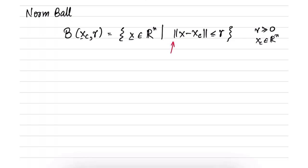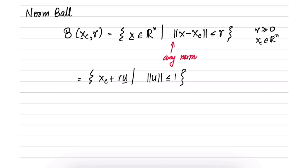This norm can be any arbitrary norm. Another way of defining the norm ball is as the set of all points of the form xc plus R times u, where the norm of u is less than or equal to 1. This is exactly the same set — substituting x equal to xc plus R·u gives the same definition. This is valid for any norm.